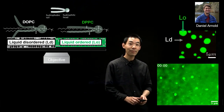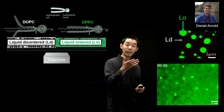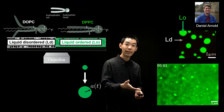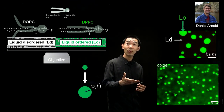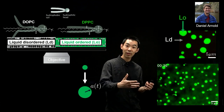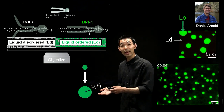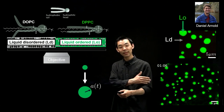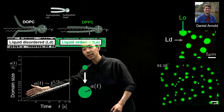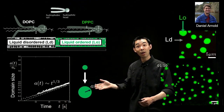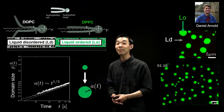When Daniel heats up the system, everything melts into a single phase. But then we cool it to room temperature, and what you see is the spontaneous nucleation of domains within this field of view that slowly grow as a function of time. We can plot the domain size A of each domain as a function of time.